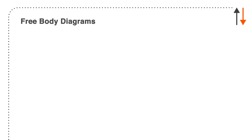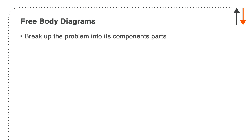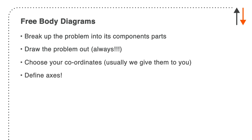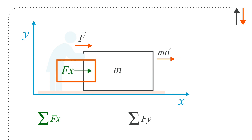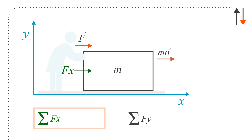The most crucial skill to develop as you start the course is really how to do free body diagrams. You need to break a problem into its component parts. The basic rules are: draw the problem out, choose your coordinates, define those axes so you know what is positive and negative, and put all the forces in the diagram. Here we have a case where a person is pushing with force F, and there is a resultant acceleration — mass times acceleration. Force F is really a component force in X, giving us our first equation.